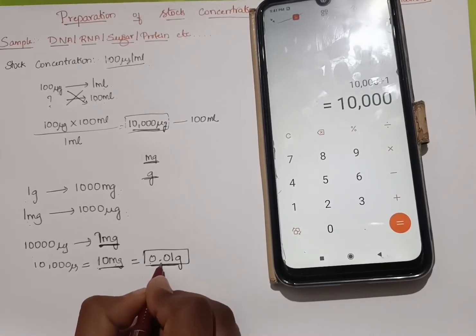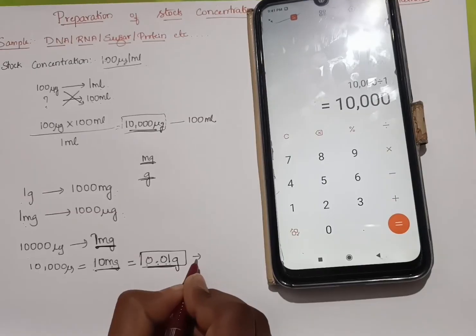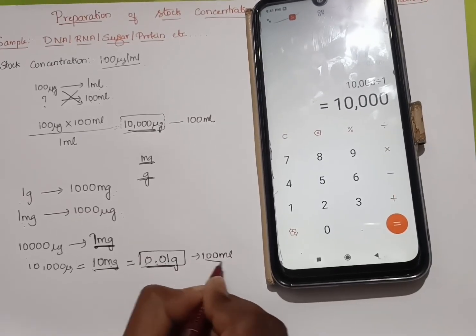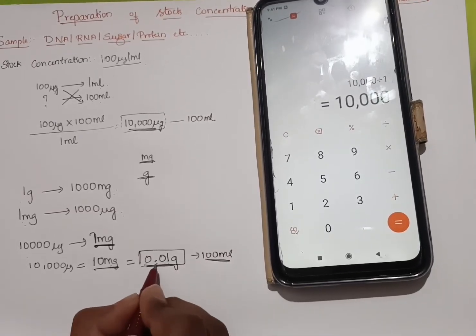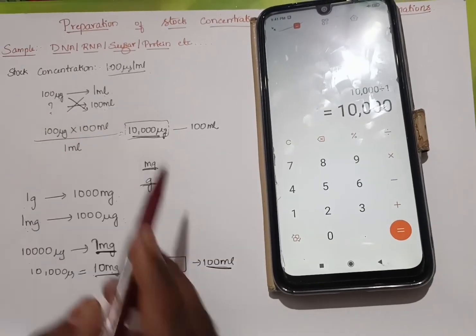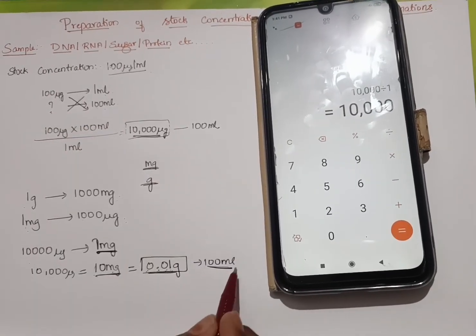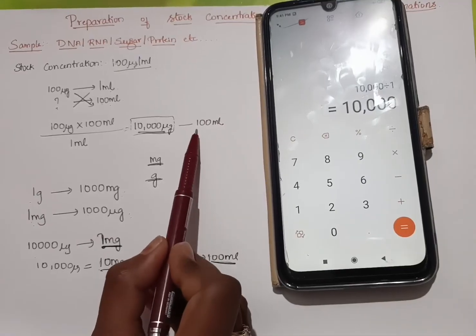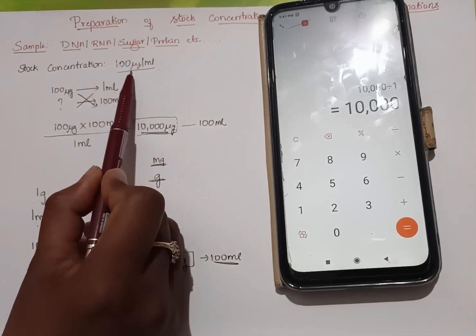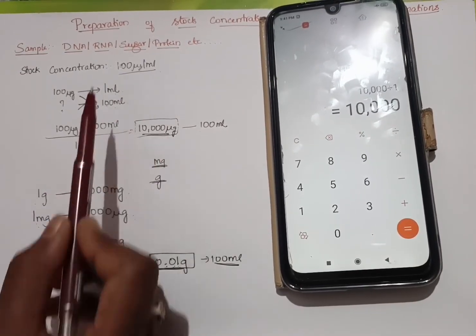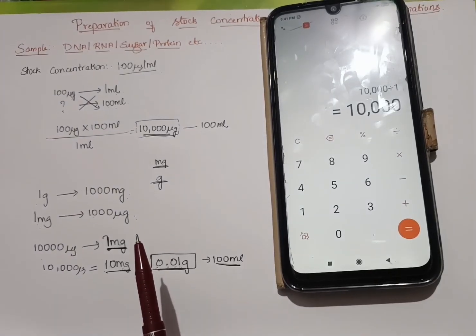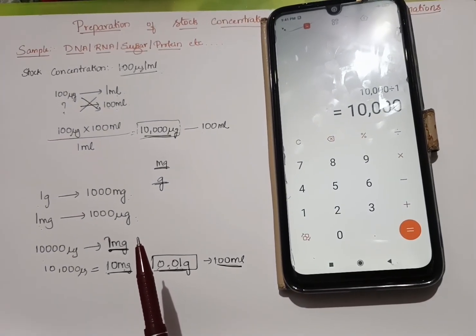So if you take 0.01 grams in 100 ml of water, if you weigh 0.01 grams of these powder and dissolve it in 100 ml of water, then we will get 100 microgram per ml as the stock. I hope this video is helpful to all of you.